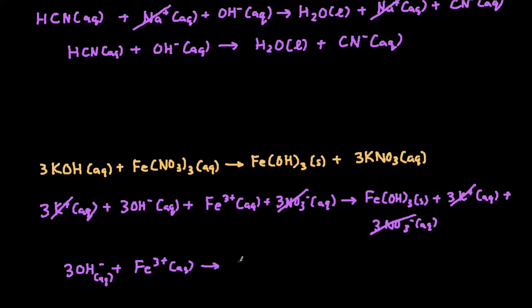And what we have left over then is 3OH- plus Fe3+ aqueous. And then on our product side, the only thing we have left over is the iron hydroxide, and that's a solid. And then that's going to be our net ionic equation.